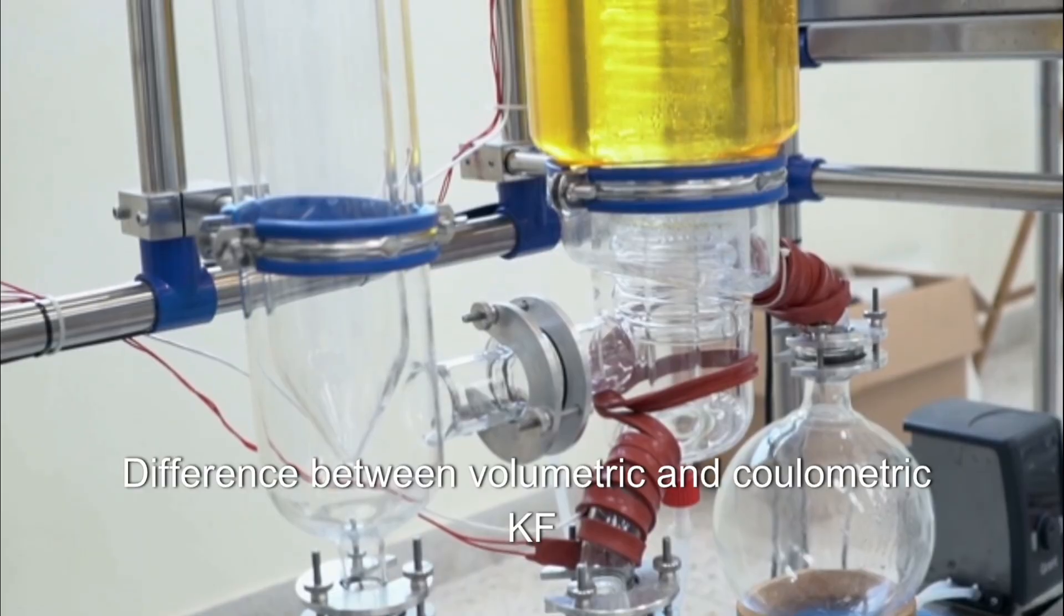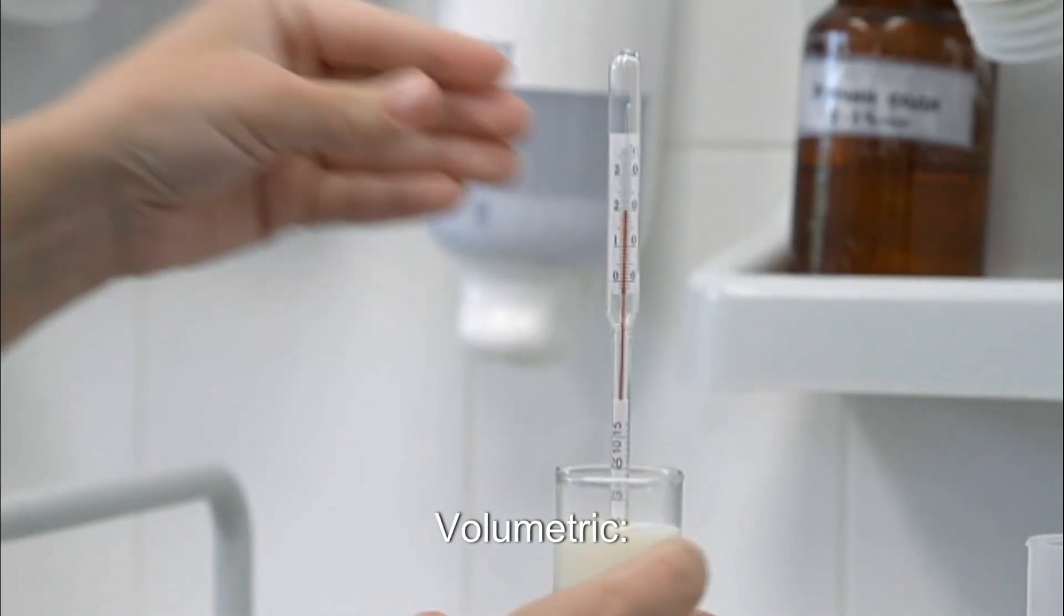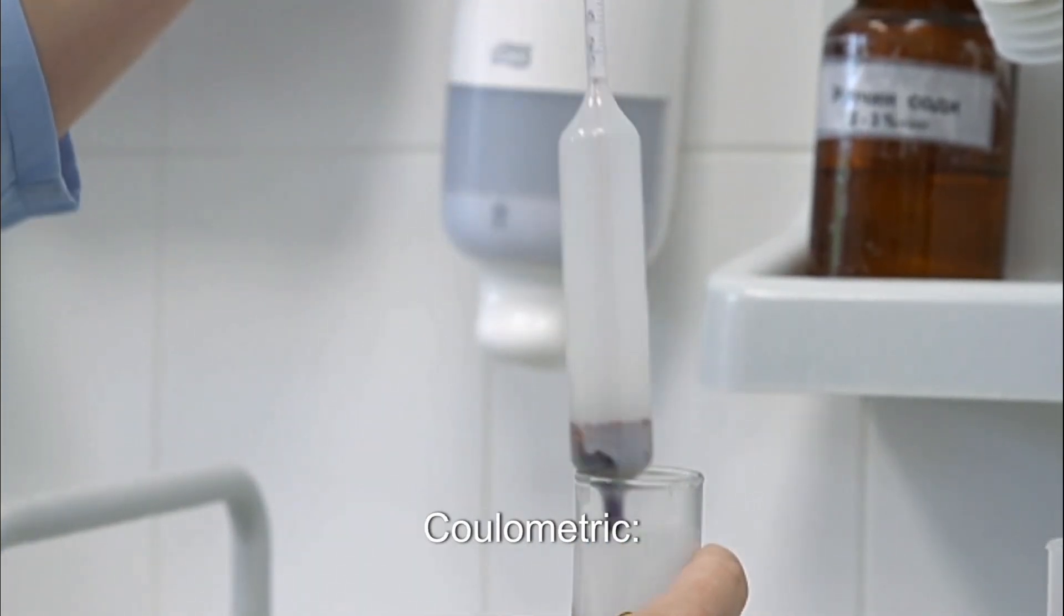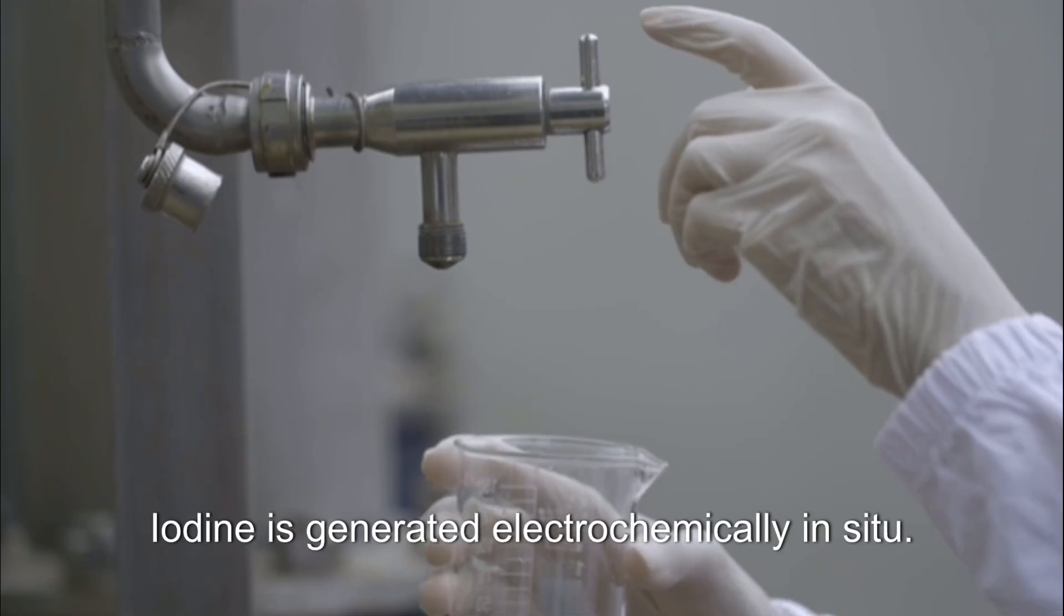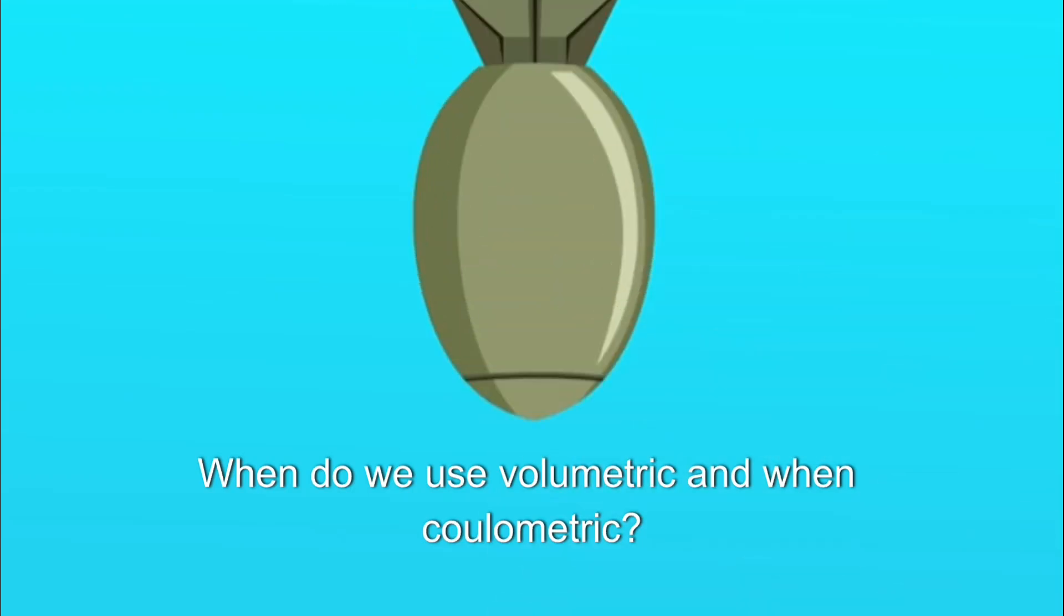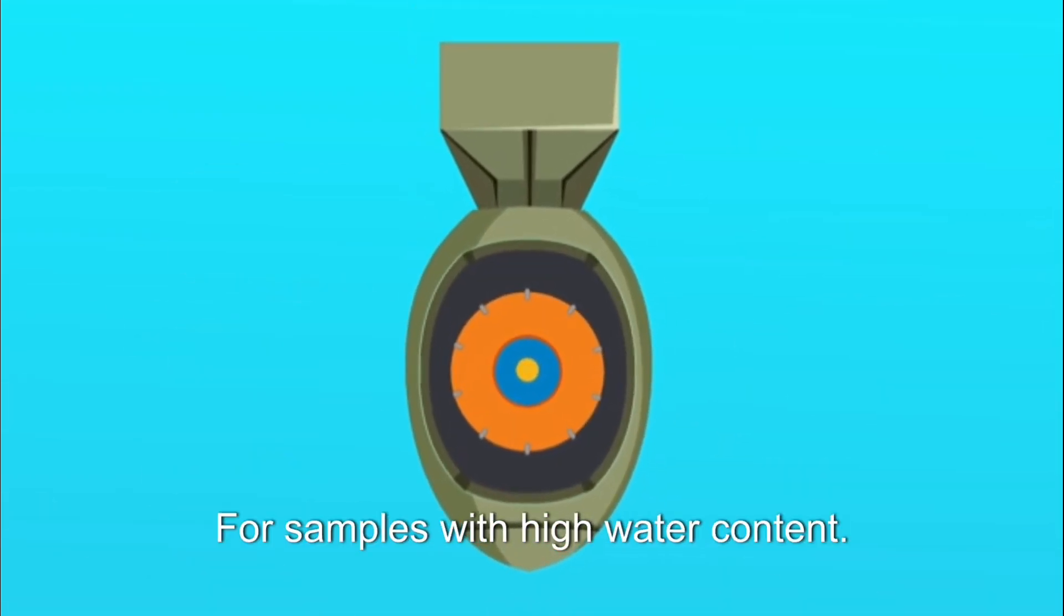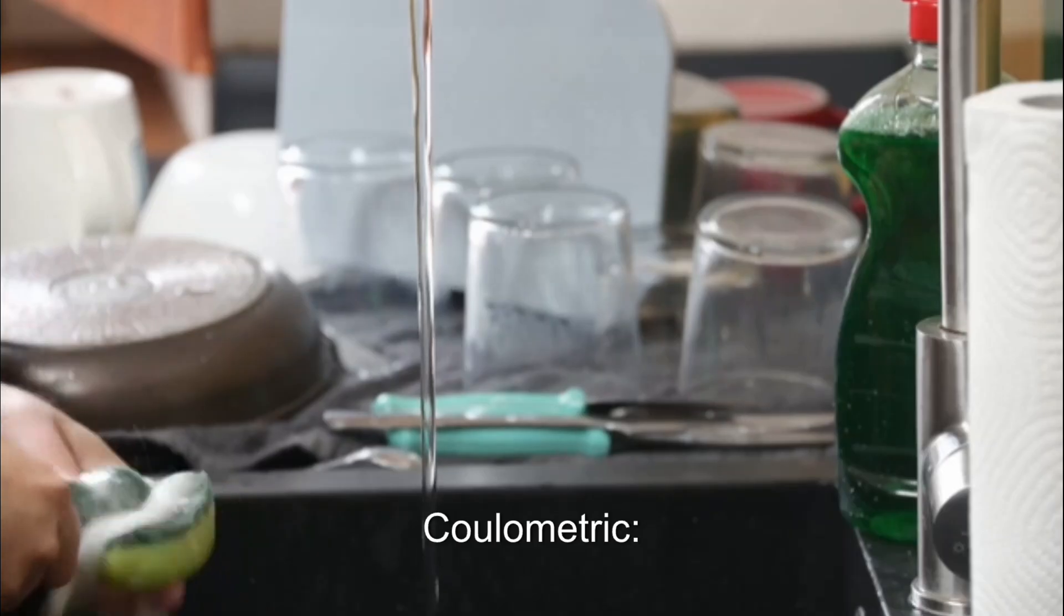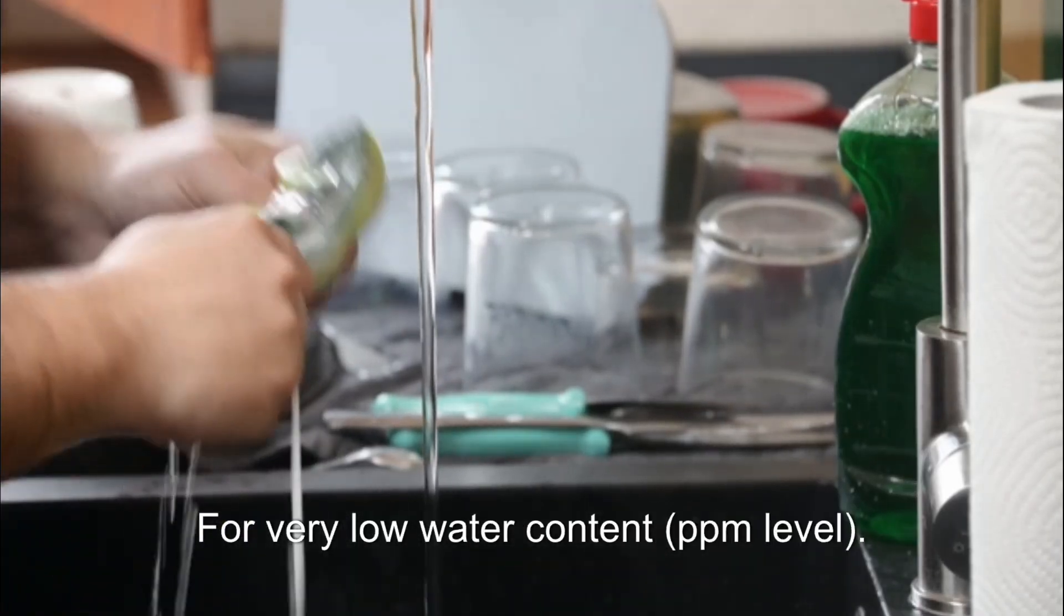Difference between volumetric and coulometric KF titration? Volumetric: iodine is added from a burette. Coulometric: iodine is generated electrochemically in situ. When do we use volumetric and when coulometric? Volumetric for samples with high water content. Coulometric for very low water content at the PPM level.